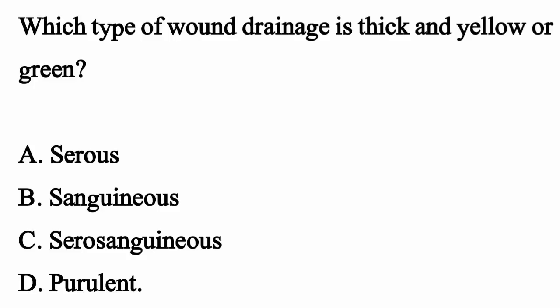Which type of wound drainage is thick and yellow or green? The correct option is Option D, purulent.